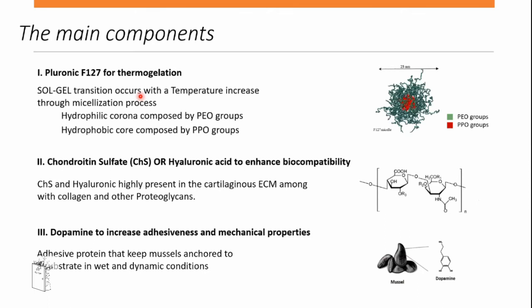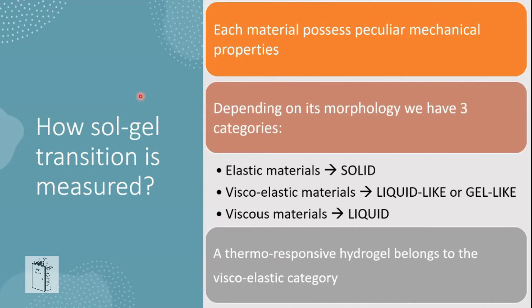The three main components used were: pluronic for thermogelation properties — the sol-gel transition occurs as temperature increases; chondroitin sulfate or hyaluronic acid for biocompatibility, since both molecules are highly present within cartilaginous ECM; and dopamine to increase adhesiveness and mechanical properties. Before rheological characterization, we needed to understand how sol-gel transition is measured.